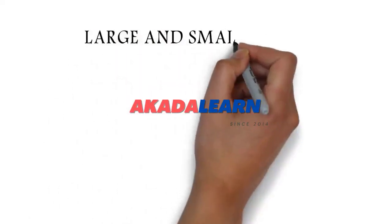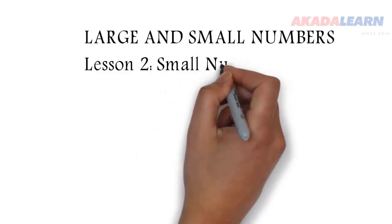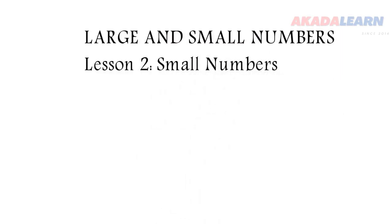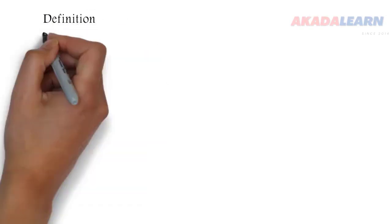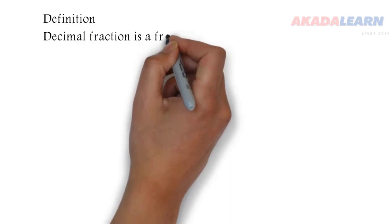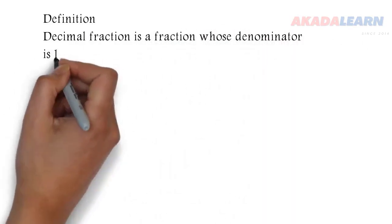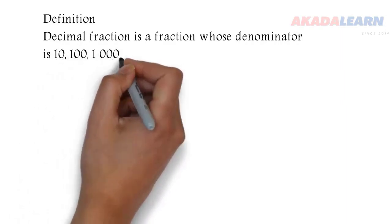We are still looking at the topic large and small numbers, and today we'll be looking at small numbers. Starting with the definition: a decimal fraction is a fraction whose denominator is 10, 100,